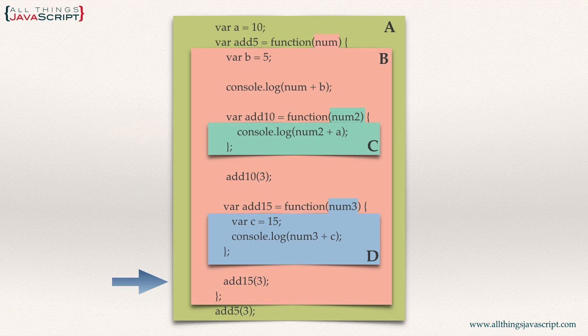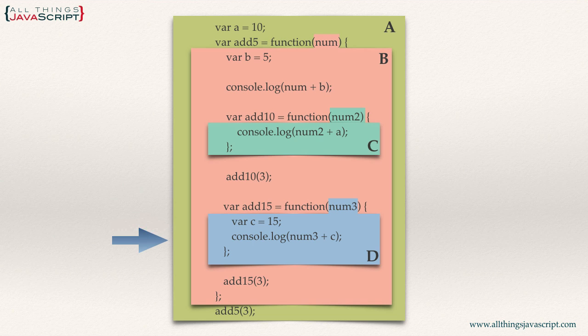Next, add15 is called passing in 3. Num3 is declared with a value of 3, and variable C is declared and assigned 15. The console.log first looks for num3, finds it within its own scope and returns 3. It then searches for C, finds it within its own scope and returns 15, adds them together, and prints out 18. The four different scopes were created by how we wrote the code — nesting functions inside add5 created those scopes and the scope chain.